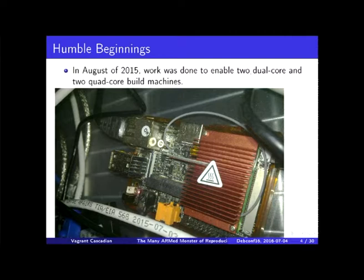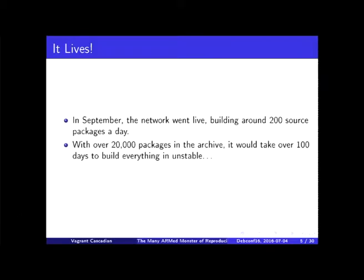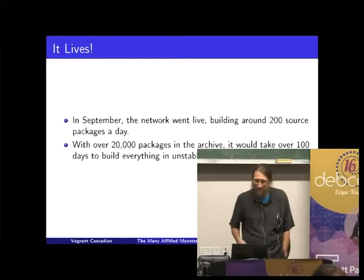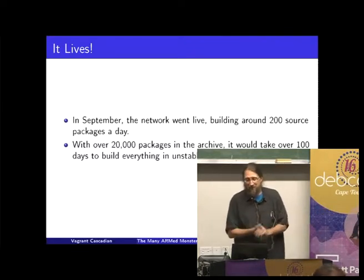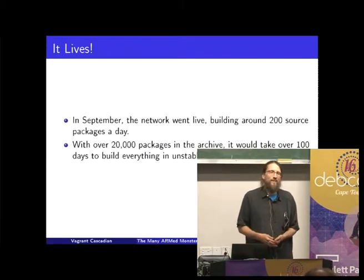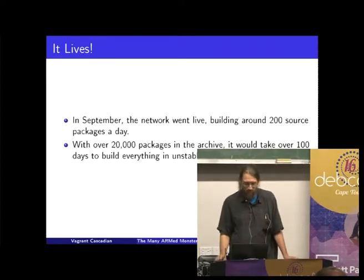We started out pretty small. In August we got two dual-core and two quad-core machines running. That's an example of one of them — a HummingBoard i2-EX, one gig of RAM, dual-core. Pretty cool. It went live in September, building about 200 source packages a day with over 20,000 — probably more like 24,000 — packages. It was looking like it's going to take over 100 days to build the entire archive just for Unstable. That's a pretty big development cycle to test the entire archive, so that just wasn't going to do.